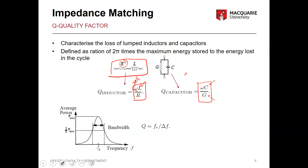For a capacitor, Q_C = ωC/G, where G is the conductance associated with the dielectric material. A very low-loss inductor with small R will have a high Q. The Q of an inductor is frequency-dependent — it changes with ω. For a capacitor, however, Q is nearly constant because the conductance G also increases with frequency, so the effects tend to cancel out.